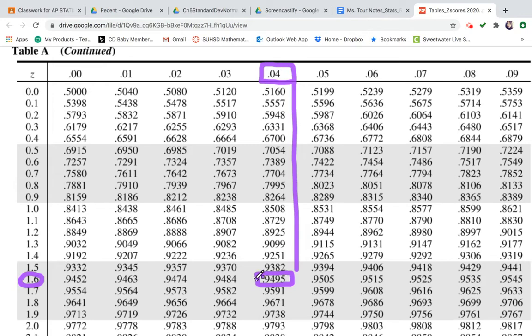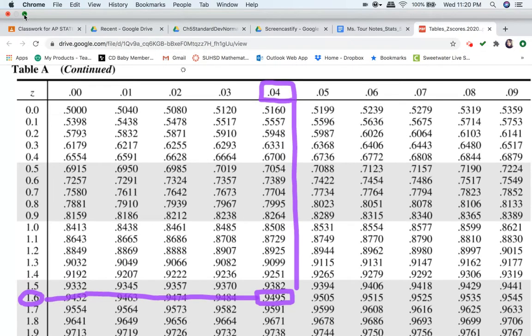Our z-score, you always start with the column here on the left, and this is adding the decimals. So it is 1.64, the closest z-score we can get to 95%. If we used our calculator, we would probably get a little closer, maybe 1.64 something else. Let's go ahead and write that z-score of 1.64 and use it in our example.